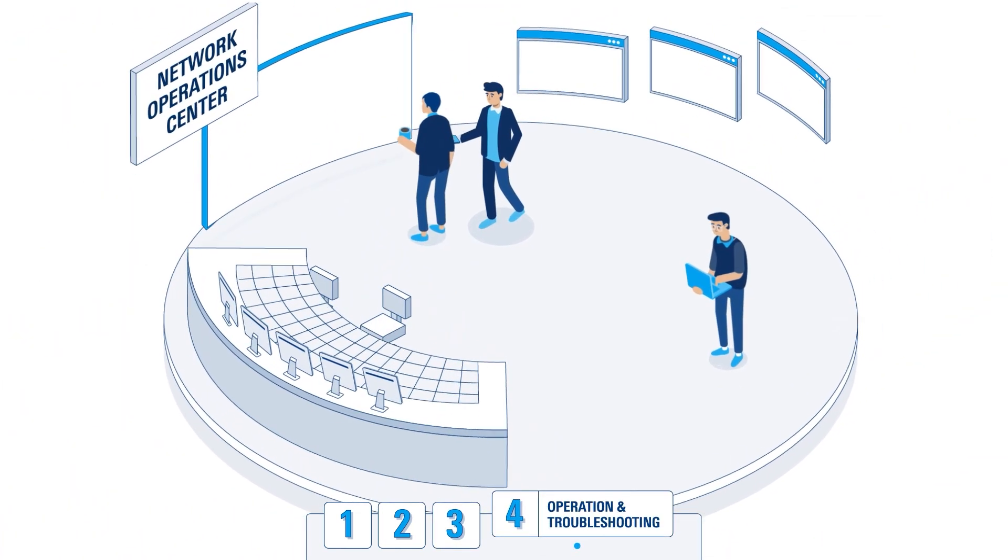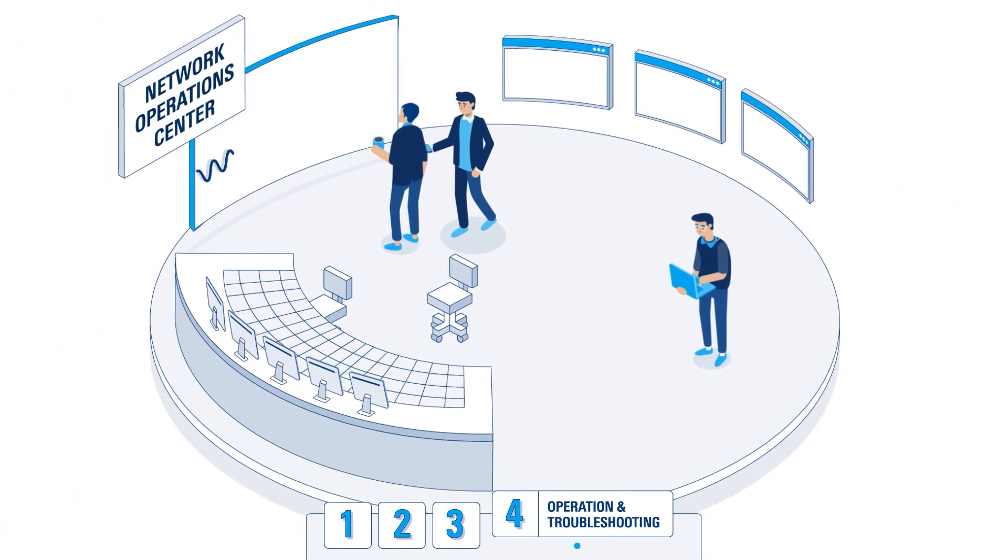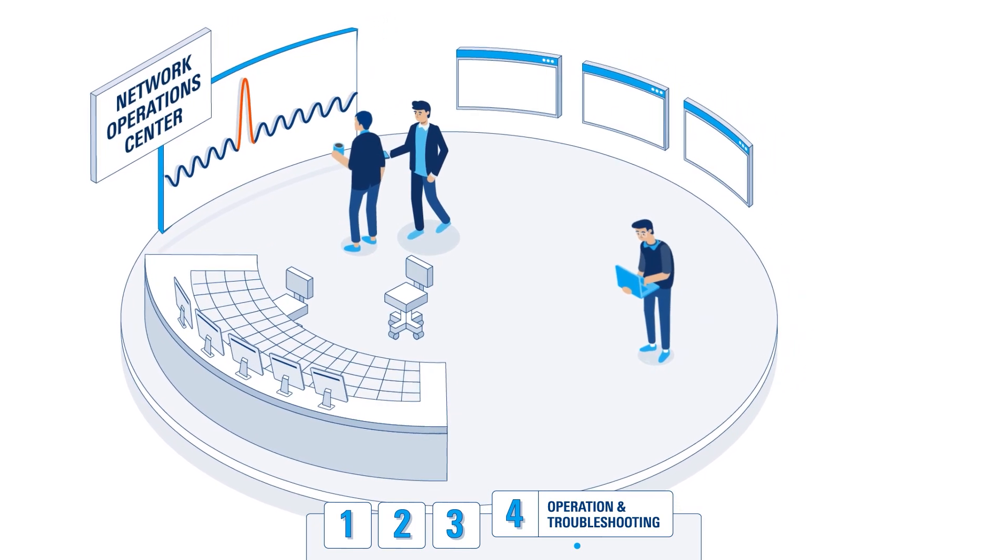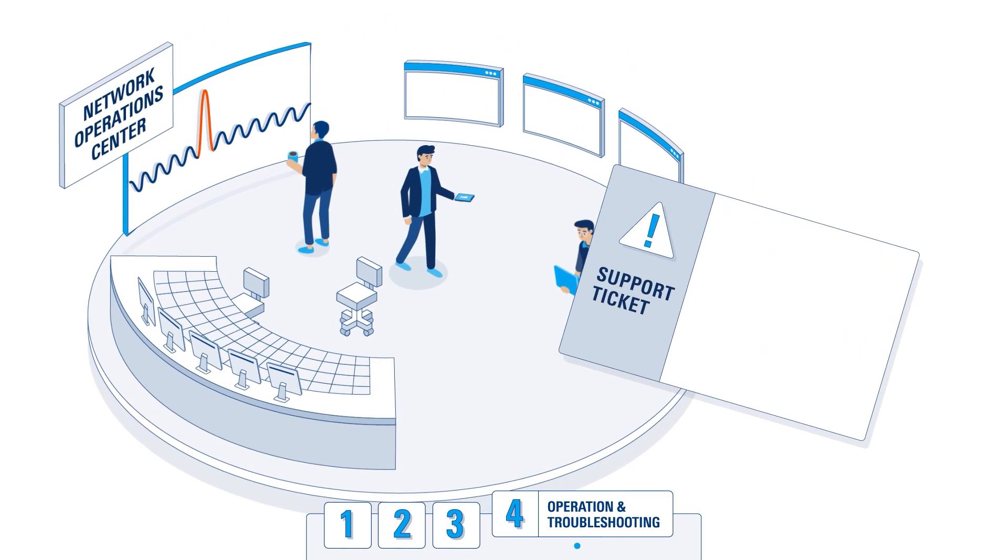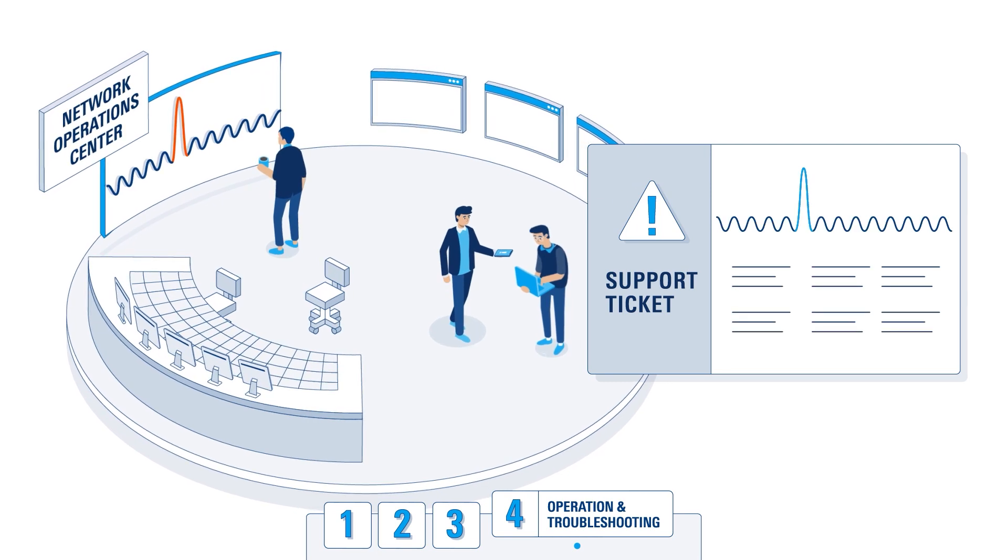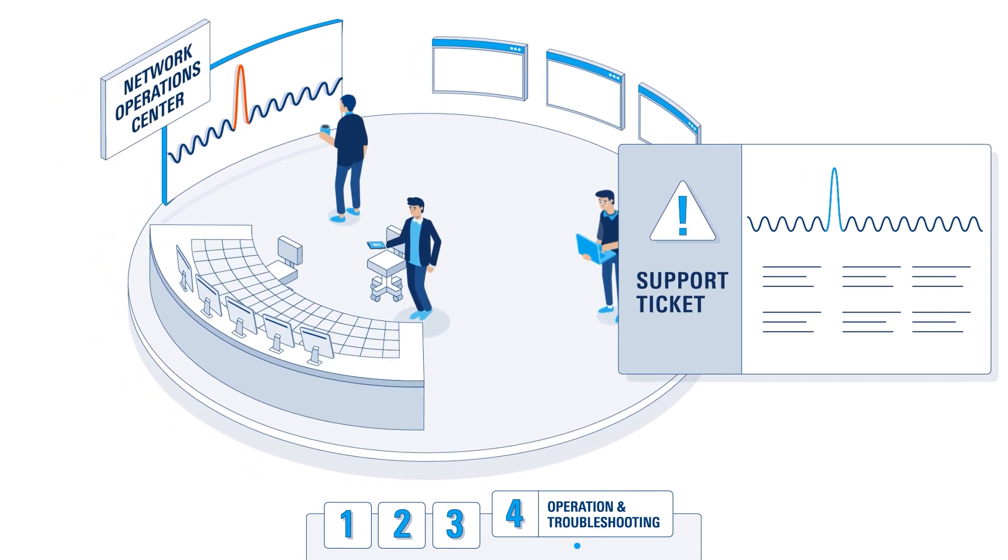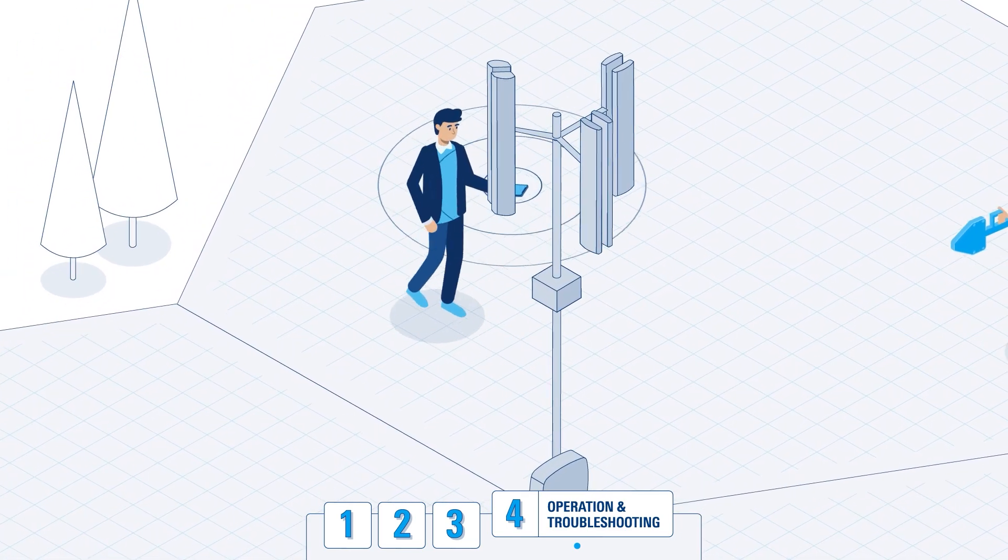Once the network is operational, diagnosing and resolving technical issues is similar to the deployment and acceptance phase. First, a network problem ticket is created in response to poor network quality KPIs or a subscriber complaint.